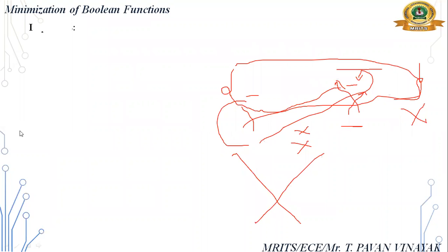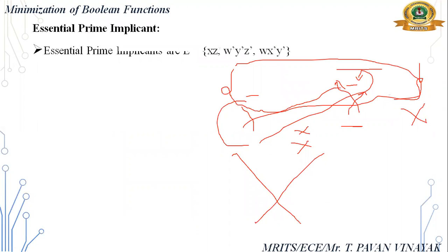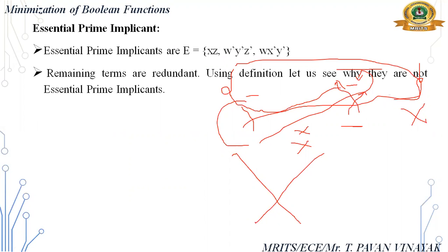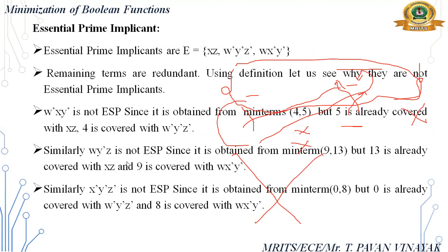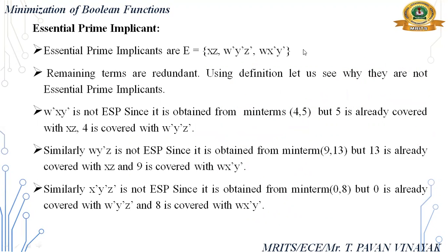So essential prime implicants are only three terms; the remaining terms are redundant. W̄X̄, X, Ȳ is not essential because 4 and 5 are already covered with XZ and W̄ȲZ̄. Similarly the remaining two terms also. Like that, you have to find the essential prime implicant, prime implicant, and implicant using K-map. But how using the Tabular method? Let us start it.